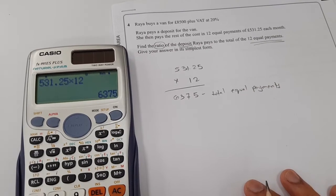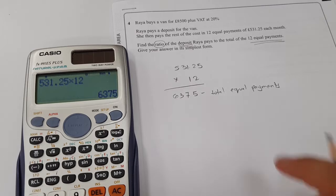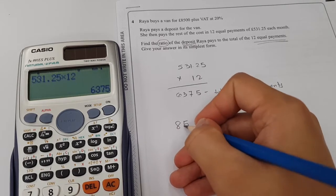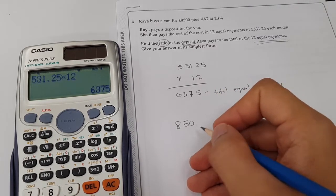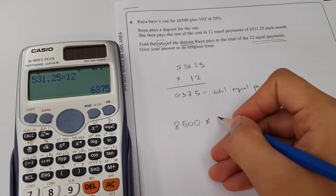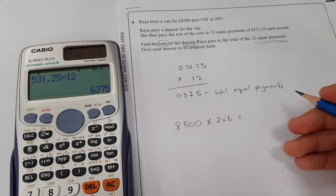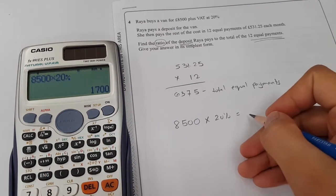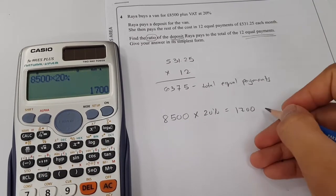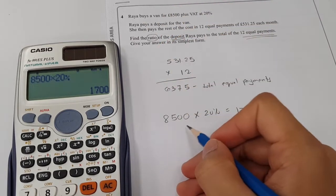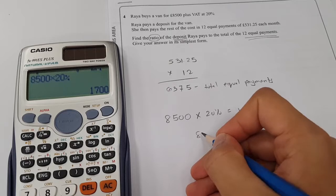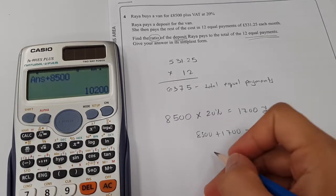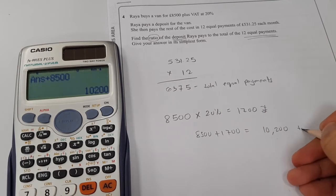We have to subtract this from the total amount that she paid in order to find the deposit. What is the total amount that Raya paid? £8,500 times 20% to find the VAT. The VAT would be £1,700. It means Raya will pay £8,500 plus an additional £1,700, which would amount to £10,200. This would be the total payments.